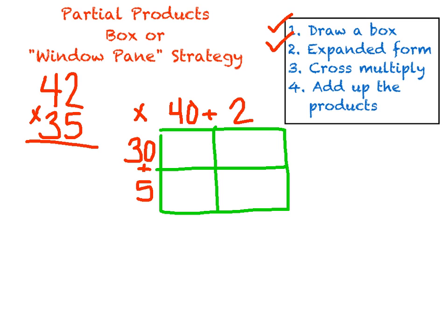Okay, I've written my expanded form, and I have drawn my box. Now I'm going to cross-multiply, and when we cross-multiply, all we're doing on here is we're taking this 40, multiplying with the 30, and the answer goes here. 30 with the 2, and the answer goes here. 5 with the 40, the answer goes here. 5 with the 2, and that product goes here. So there's going to be a separate product in each one of these boxes. So we have four products, or partial products, and then we're going to put them all together.